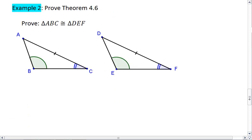Let's look at another proof, and we can actually prove theorem 4.6. So we're going to prove the two triangles are congruent. Now recall, we can prove triangles congruent by SSS, by SAS, by HL, and by ASA.